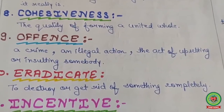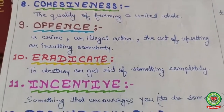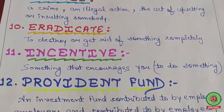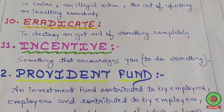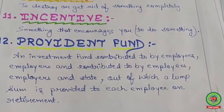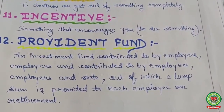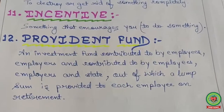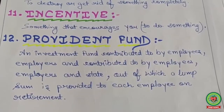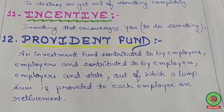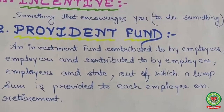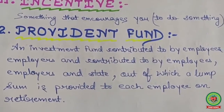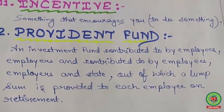Ninth keyword: offense — a crime and illegal action; the act of upsetting or insulting somebody. Tenth: eradicate — to destroy or get rid of something completely. Eleventh: incentive — something that encourages you to do something. Twelfth: provident fund — an investment fund contributed to by employers, employees, and the state, out of which a lump sum is provided to each employee on retirement.